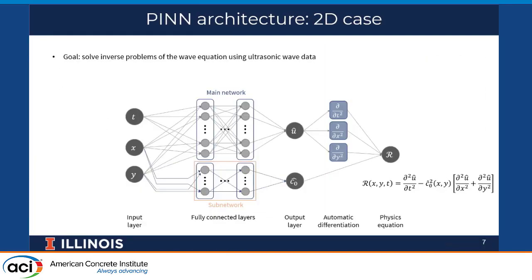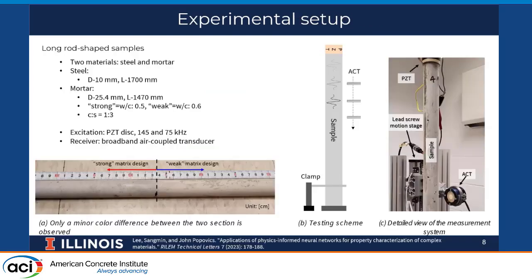The experimental setup used two different materials: steel and mortar. Both samples have a long rod-shaped geometry. The steel sample has no known defects, while the mortar sample consists of two distinct sections along its length — a strong part with a water-cement ratio of 0.5 and a weak part with a water-cement ratio of 0.6. To generate wave signals, a PZT transducer is attached to the flat end of the sample.